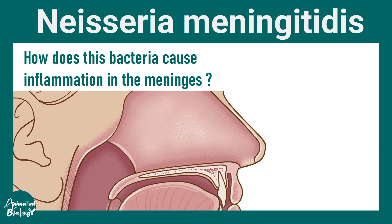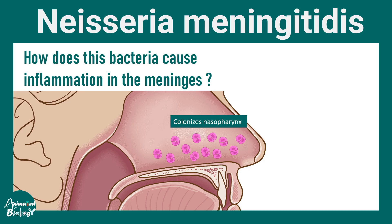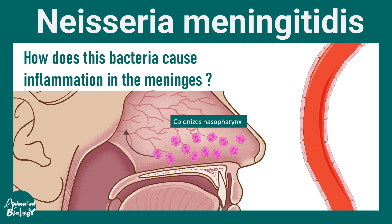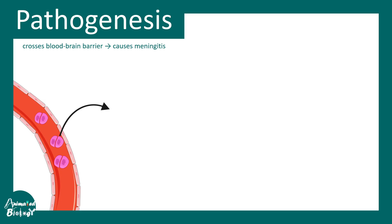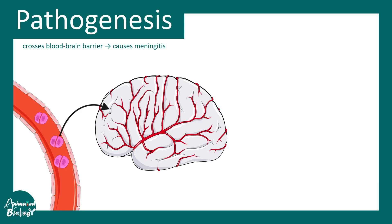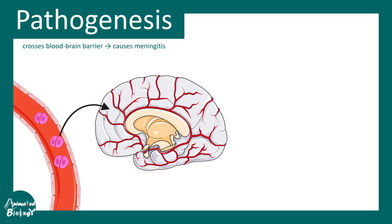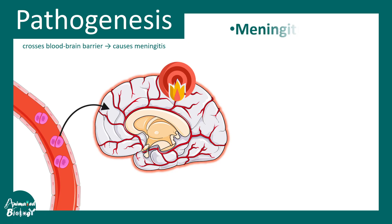How does the bacteria cause meningitis? The nasopharynx is the location where they initially colonize. From there, they can pass into blood vessels and move into the bloodstream. They circulate through the bloodstream, eventually reach the brain, and breach the blood-brain barrier, which protects the brain from harmful substances in the blood.